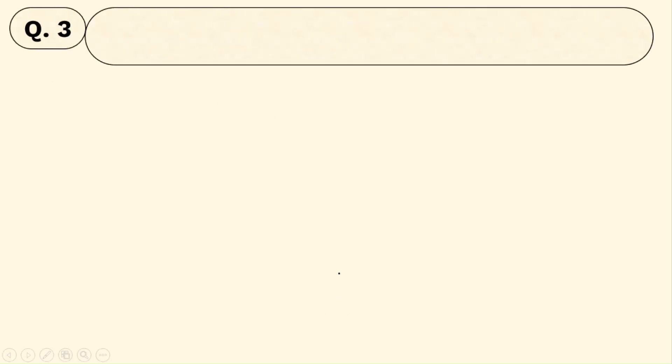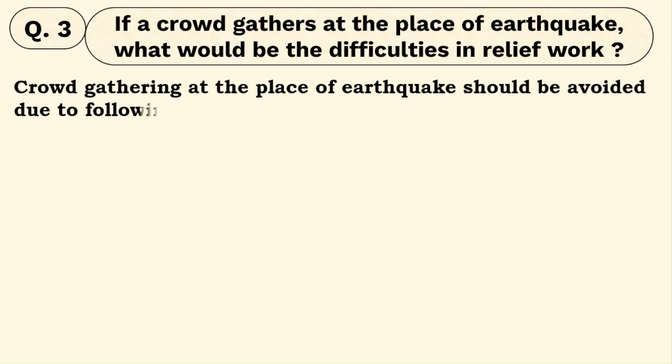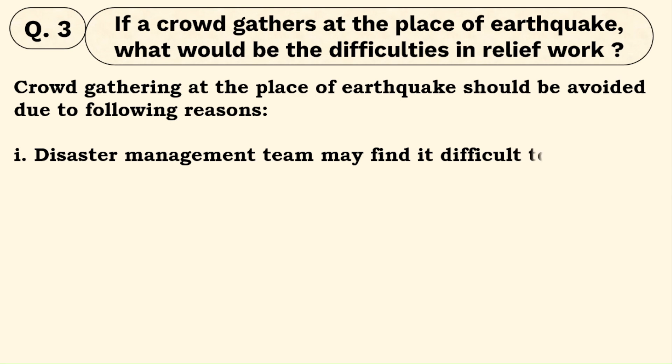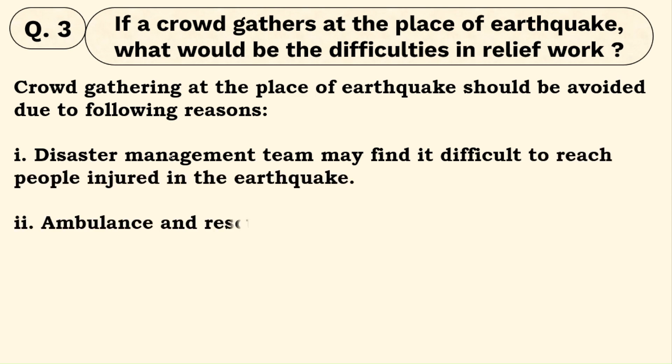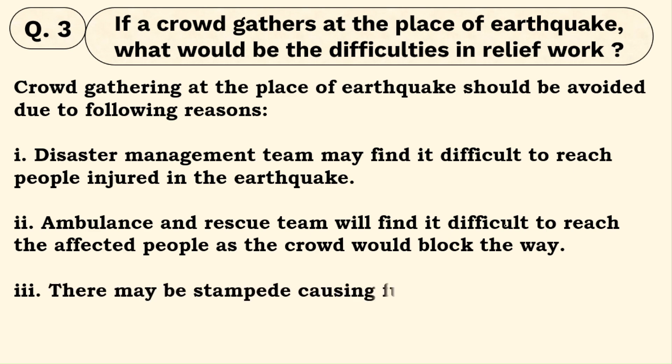Question number three: if a crowd gathers at a place of earthquake, what would be the difficulties in relief work? If an earthquake hits a place and a crowd gathers there, the disaster management team will have difficulty reaching injured people. Ambulance and rescue teams will also have difficulties reaching affected people and helping them. It can create stampede-like situations causing additional injuries or loss of life. So such situations should be avoided during an earthquake.